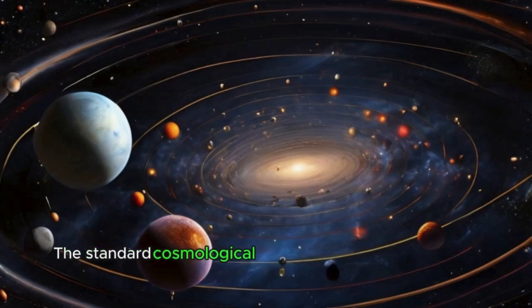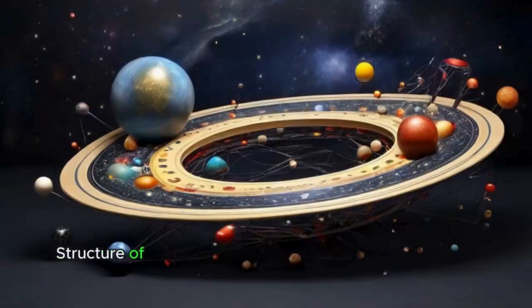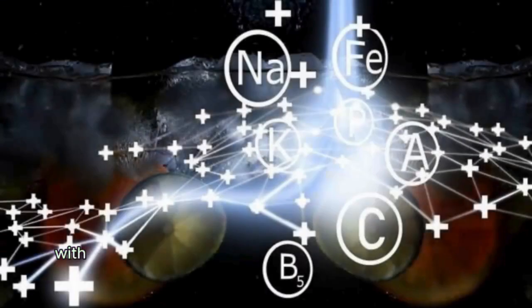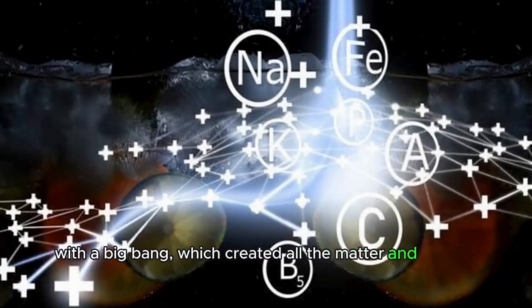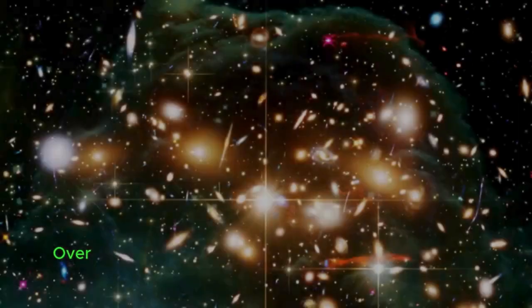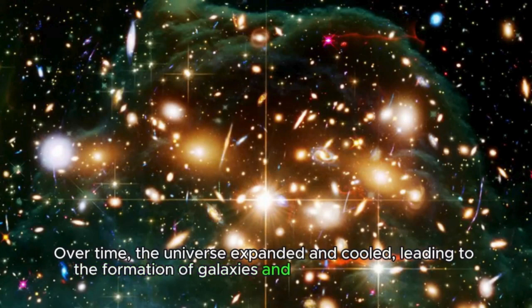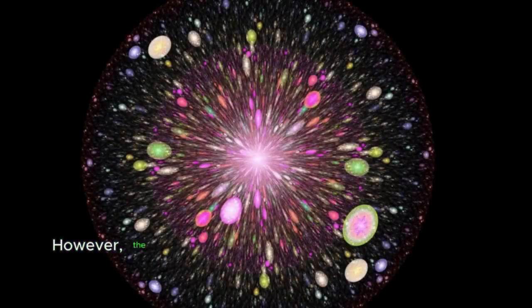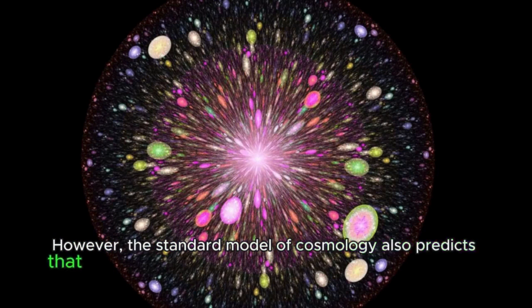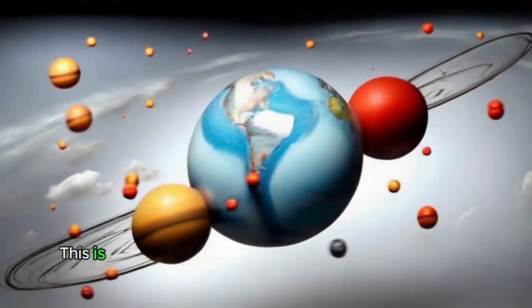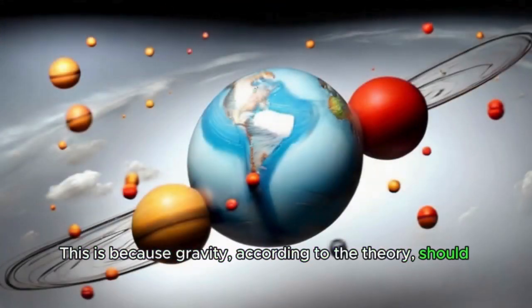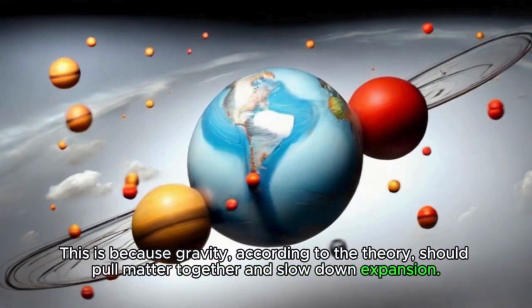The standard cosmological model is the prevailing model of the evolution and structure of the universe. It is based on the idea that the universe began with a big bang, which created all the matter and energy in the universe. Over time, the universe expanded and cooled, leading to the formation of galaxies and other large structures. However, the standard model of cosmology also predicts that the expansion of the universe should slow down over time. This is because gravity, according to the theory, should pull matter together and slow down expansion.